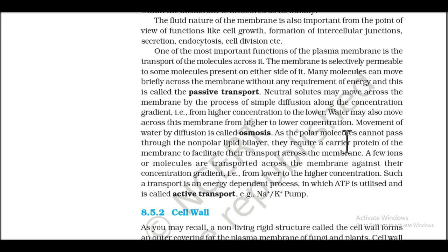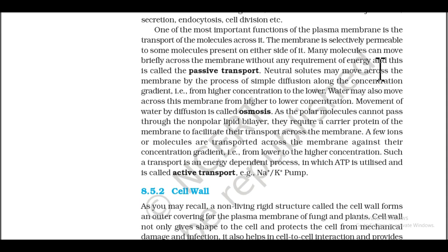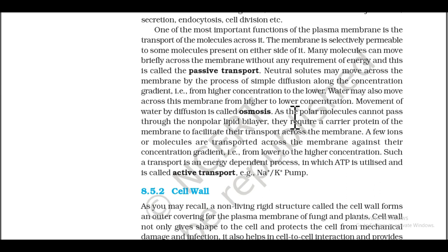One of the most important functions of the plasma membrane is the transport of molecules across it. The membrane is selectively permeable to some molecules. Many molecules can move briefly across the membrane without any requirement of energy — this is called passive transport. Neutral solutes may move across the membrane by simple diffusion along the concentration gradient, from higher to lower concentration. Water may also move across this membrane from higher to lower concentration; the movement of water by diffusion is called osmosis.